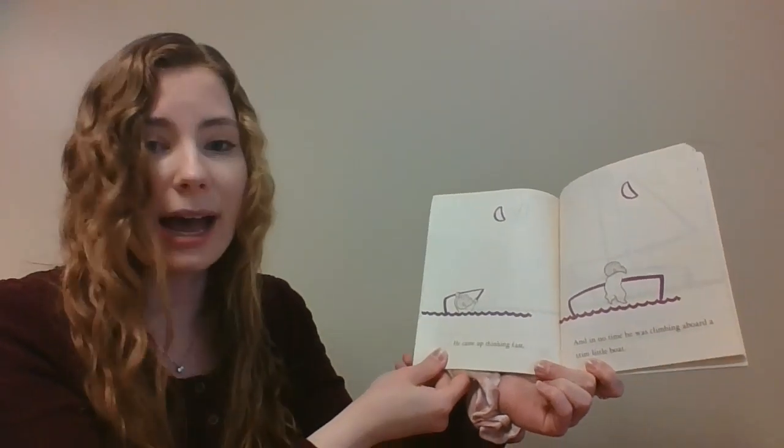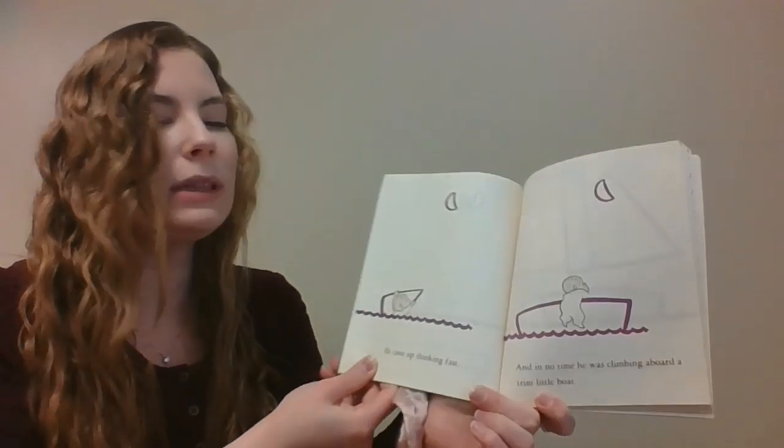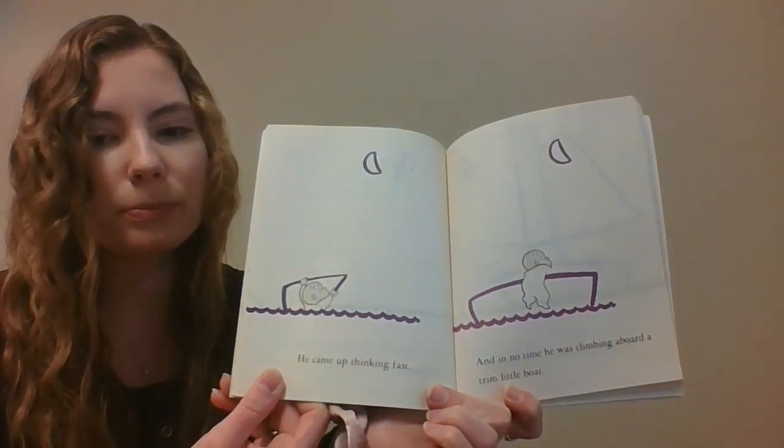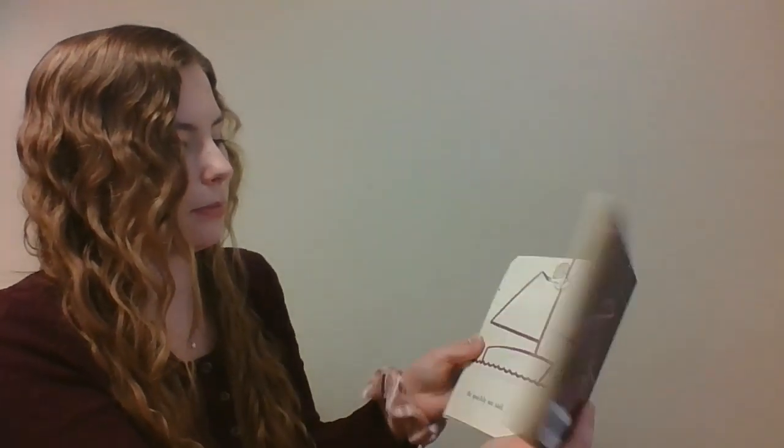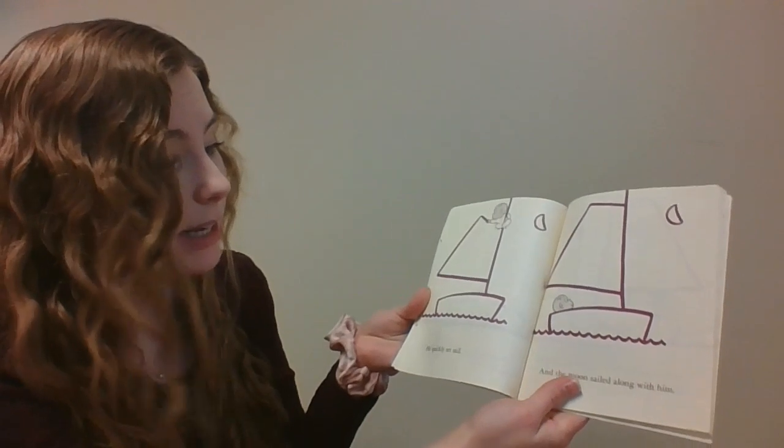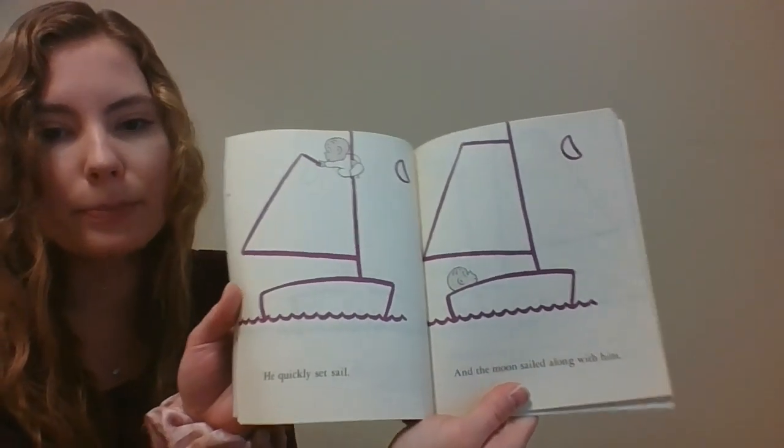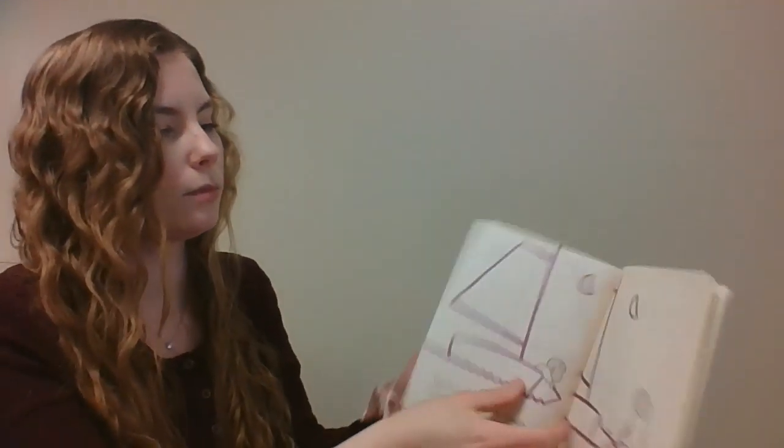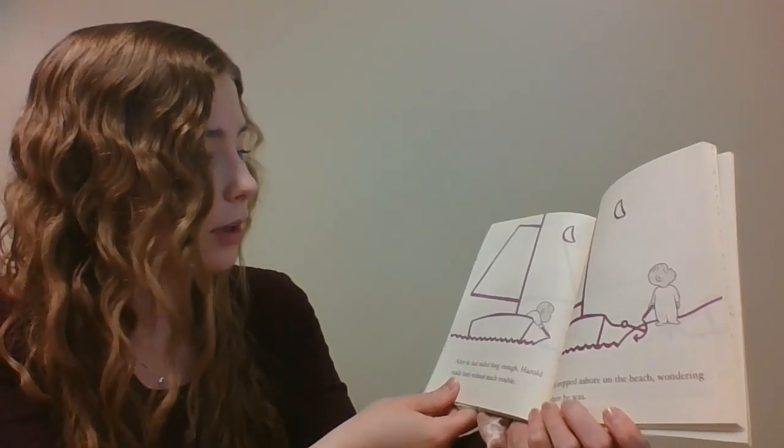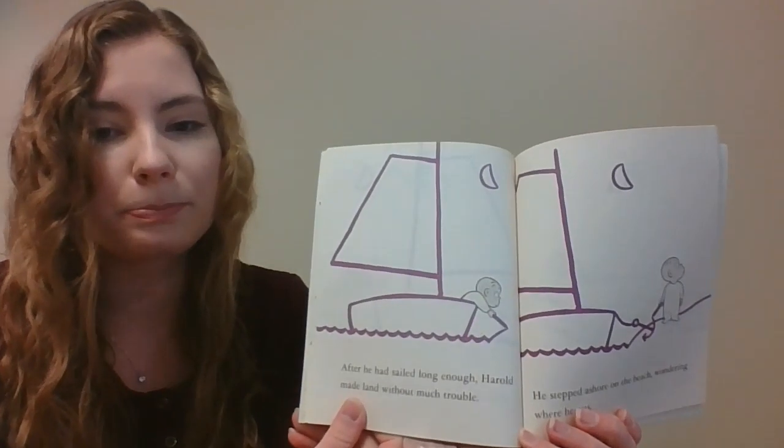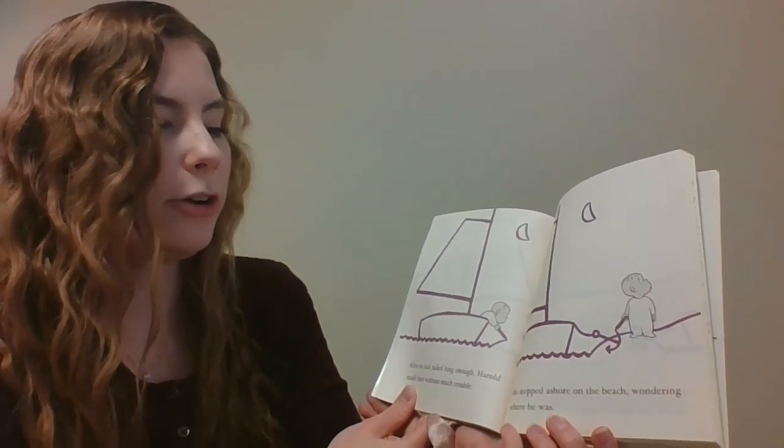He came up thinking fast, and in no time he was climbing aboard a trim little boat. He quickly set sail, and the moon sailed along with him. After he had sailed long enough, Harold made land without much trouble. He stepped ashore on the beach, wondering where he was.